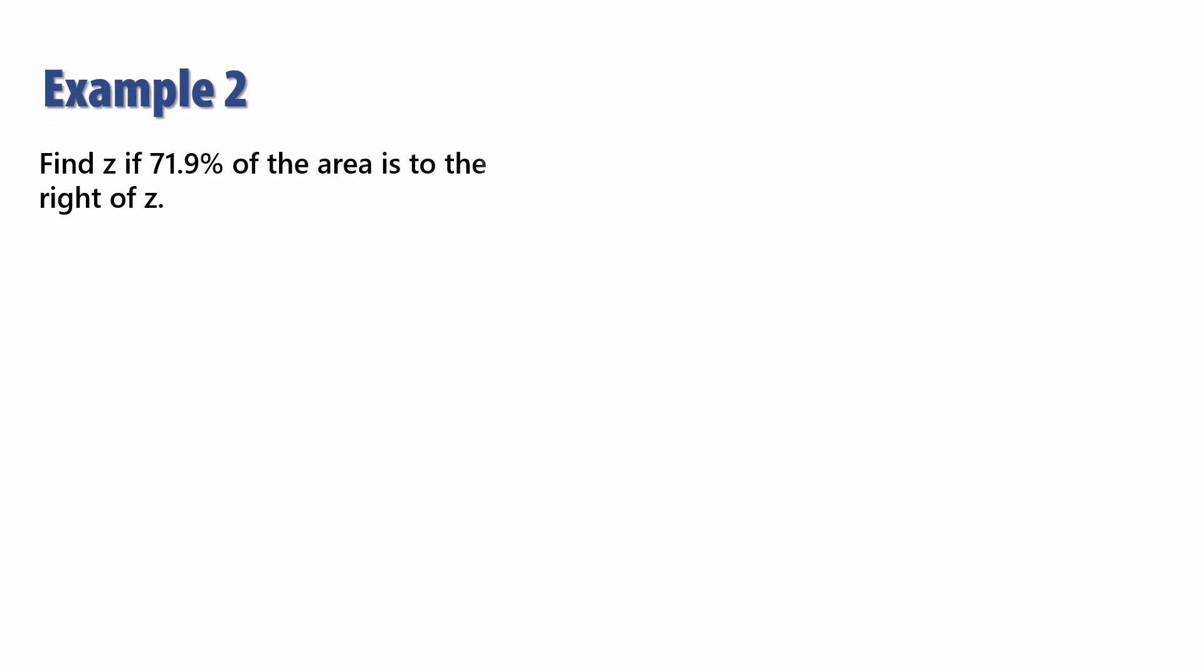In the second example, we want to find Z such that 71.9% of the area is to the right of Z. 0.719 is greater than 0.5 here and it is to the right of Z, so Z has to be on the negative side of the center.